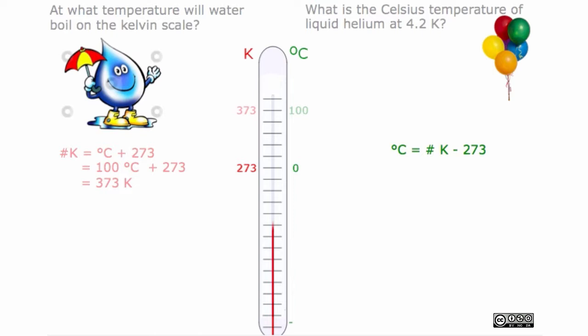Because we added 273 to end up with Kelvins on the other side of the thermometer, we are now subtracting 273 to end up with Celsius on the right side of the thermometer.